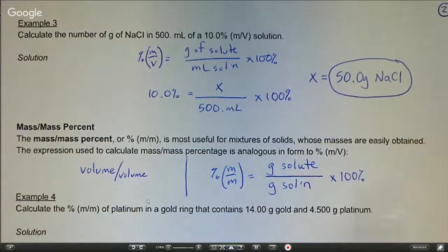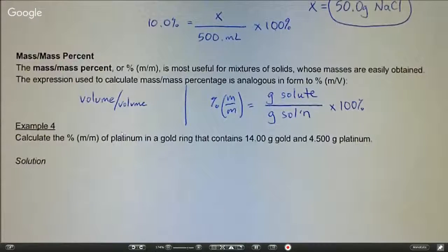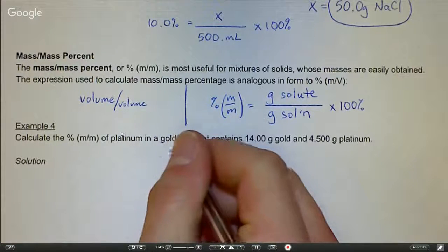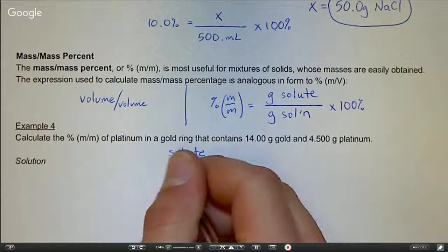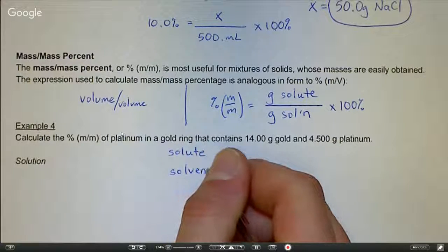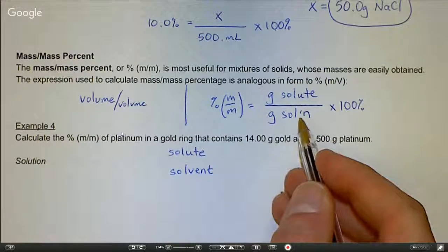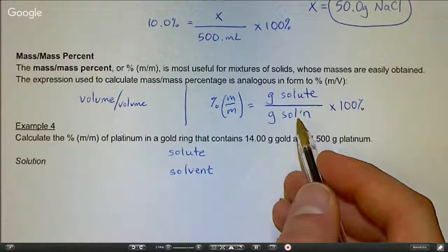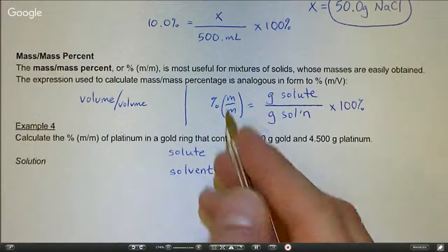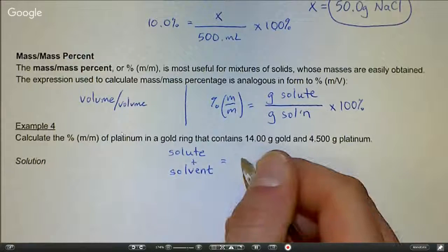Example four says calculate the percent mass mass of platinum in a gold ring that contains 14 grams of gold and 4.500 grams of platinum. Here's our first question: what's the solute and what's the solvent? Because we need to know that the solute and solvent when we add them together equal the solution. Recall that the solute is in smaller quantity, so the platinum is your solute, the gold is your solvent.